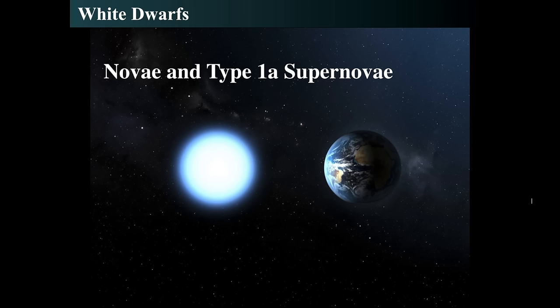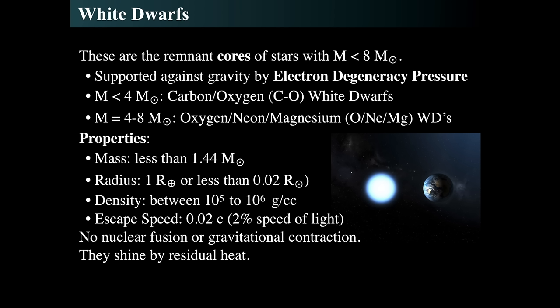White dwarfs are really interesting things. We learned last time that white dwarfs are the remnant stars — the cores of big stars that began with less than about 8 times the mass of the Sun. The core is supported against gravity by electron degeneracy pressure. If the initial star is less than 4 solar masses, the white dwarf is made of carbon and oxygen.